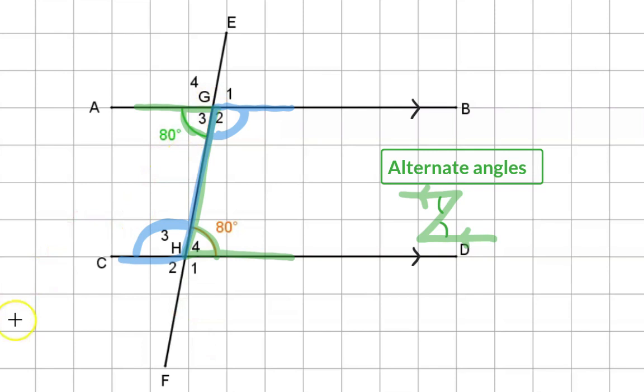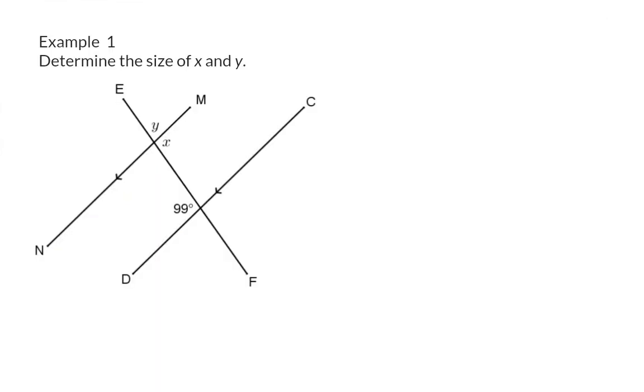Let's have a look at some examples. Example 1: Determine the size of X and Y. In the sketch you will notice that we have two parallel lines. That means we can be on the lookout for an F or an N. If I start off by drawing angle X you can see that I can form an N which means angle X is 99 degrees.